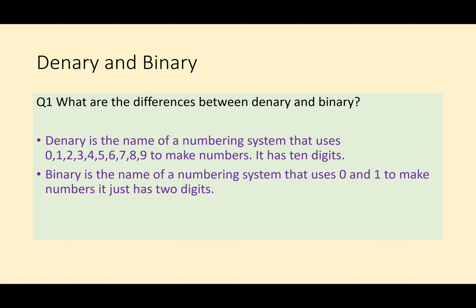Binary, on the other hand, is a numbering system that just uses 0 and 1 to make numbers, and it has just two digits. So there are some differences, but let's also have a look at how the numbering systems are used.